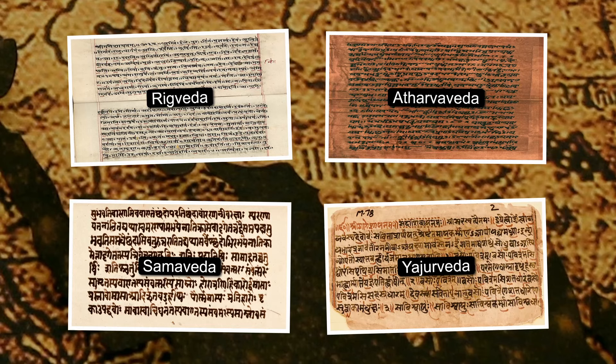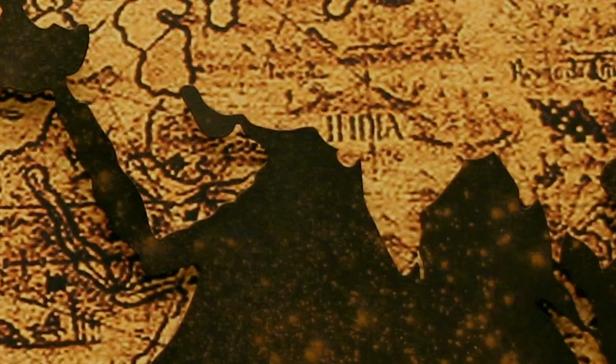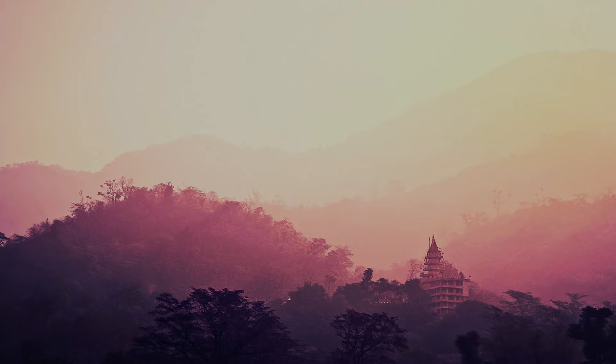There are four Vedas, and they talk about various deities, hymns, mantras, rituals, and religious and philosophical discussions. They are the earliest religious texts in India, and in fact some of the earliest in the world. This Vedic period of history lasts for quite some time, but eventually comes to an end around the time when the Upanishads are composed.